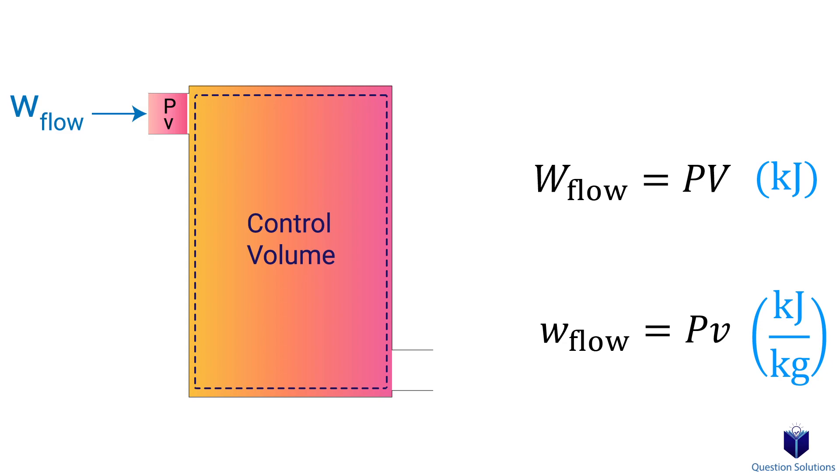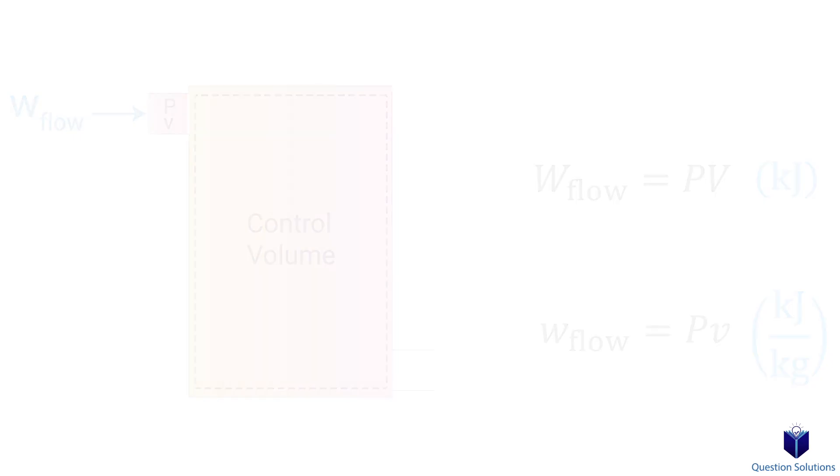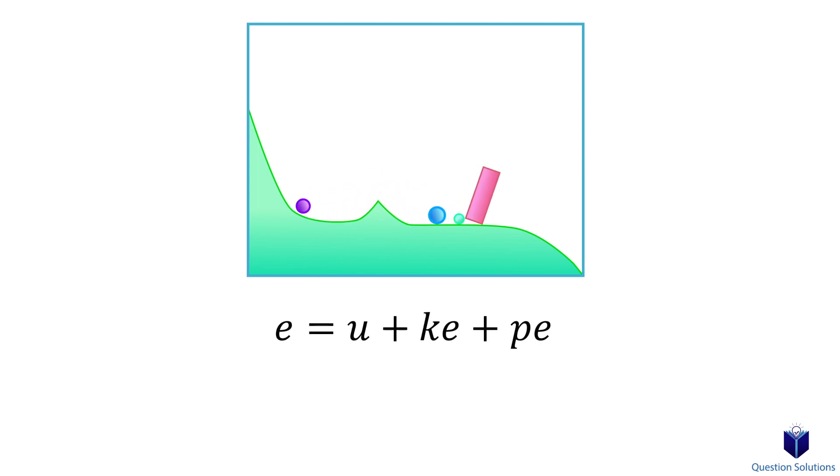This equation is the same whether a fluid is pushed into or out of a control volume. Previously we talked about the total energy of a system using this equation: θ = u + ke + pe, where u is internal energy, ke is kinetic energy, and pe is potential energy.